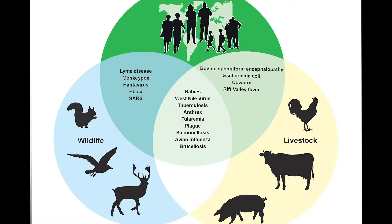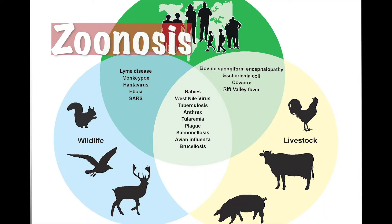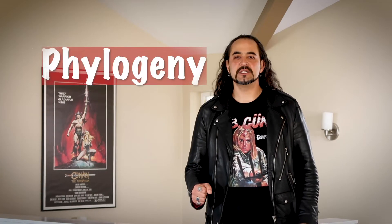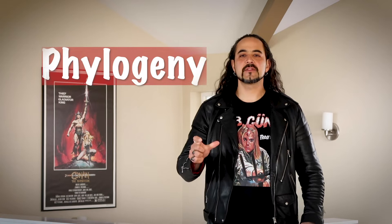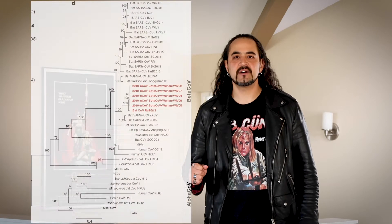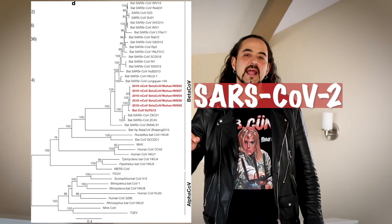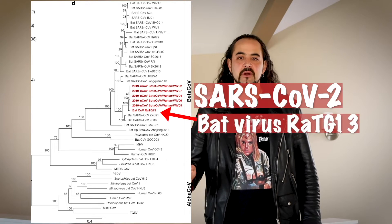Most viruses that infect humans have an animal host and then they jump to humans or to another species. This is called zoonosis. Because we know the genome of SARS-CoV-2, we can use phylogeny — meaning compare the genome to other existing viruses and animals — and we can decipher where it actually came from.